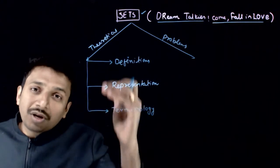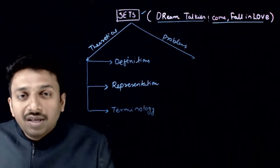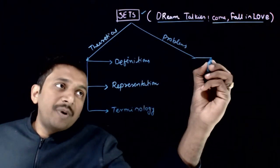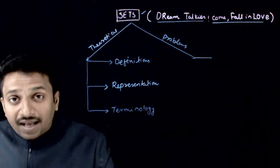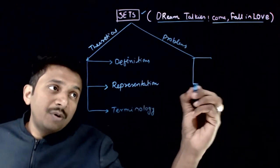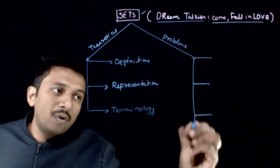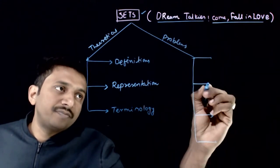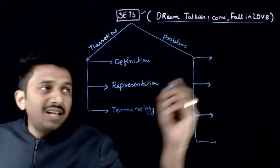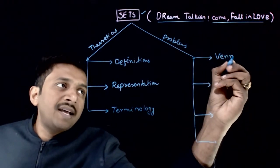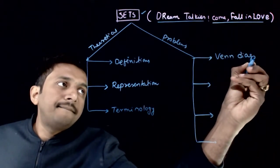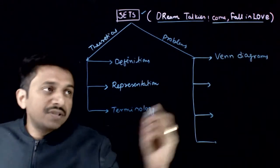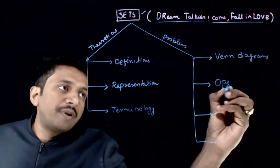Once you are conversant with these three topics, next you go to the topics where problems will be asked. Those topics come under four headings. The first is the topic of Venn diagrams. The second is operations—the operations that we do on sets.